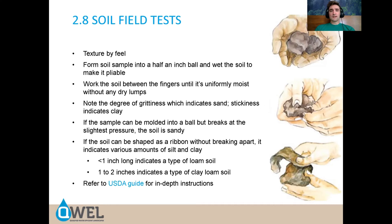Much more reliable is the texture-by-feel method. There's a USDA guide that's an easy-to-follow flowchart. You play with the soil and see if it can do what different textures of soil should do. If it can make a ball, you know you're not on pure sand. Then you try to form a ribbon held against gravity — how far that ribbon hangs before it breaks tells you how much clay you have. And the texture, whether gritty or smooth, indicates whether you have silt. With all three tests combined, you can identify a category on the soil texture triangle.